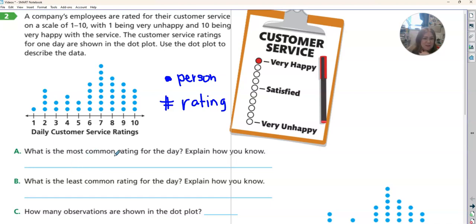So first it says, what is the most common rating for the day? We're looking at a number, the rating that's most common, which one happens the most. We want to go most goes up, so that is a seven. The rating is a seven, and I know that because it is the highest. The seven goes the highest.